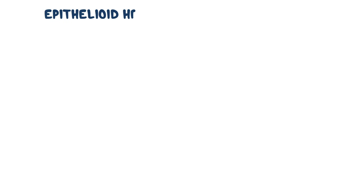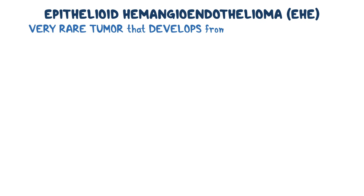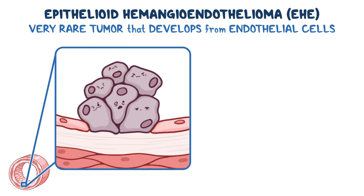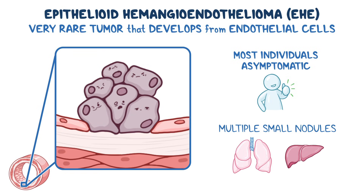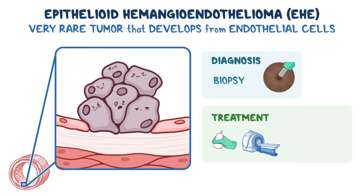As a quick recap: epithelioid hemangioendothelioma, or EHE, is a very rare tumor that develops from endothelial cells lining the inside of blood vessels. Most individuals are asymptomatic, and the tumor is picked up incidentally on imaging as multiple small nodules, often in the liver or lungs. Diagnosis requires a biopsy, and treatment may include active surveillance, surgery, or targeted medications depending on the features of the tumor.